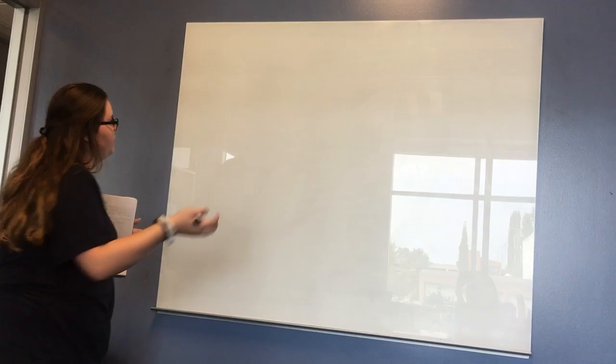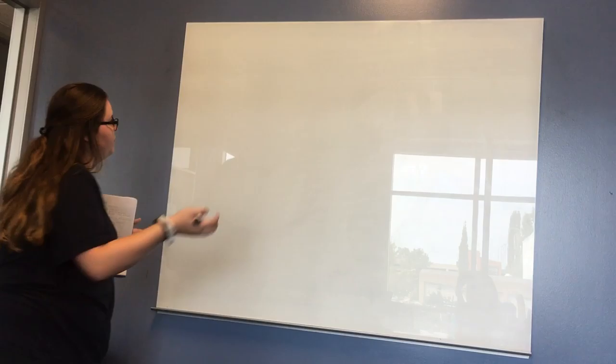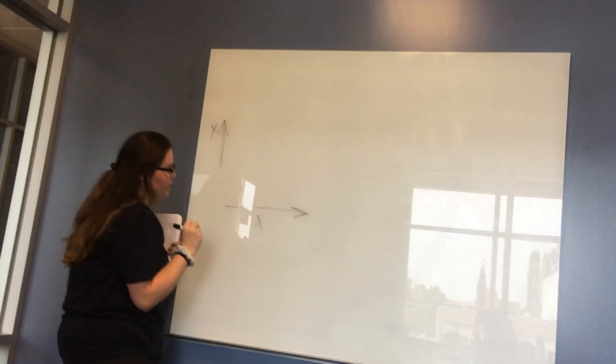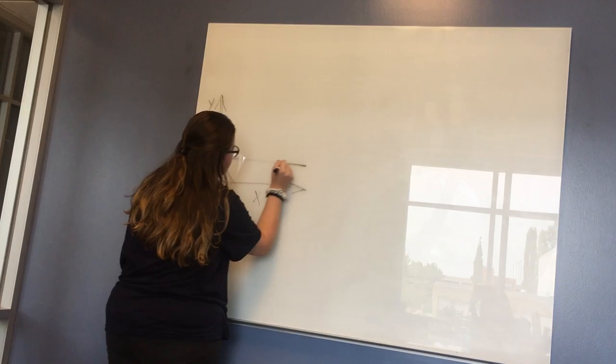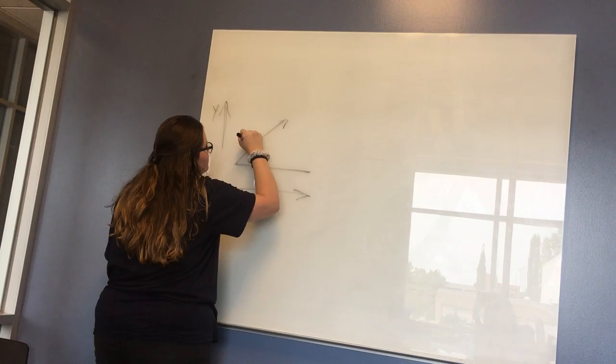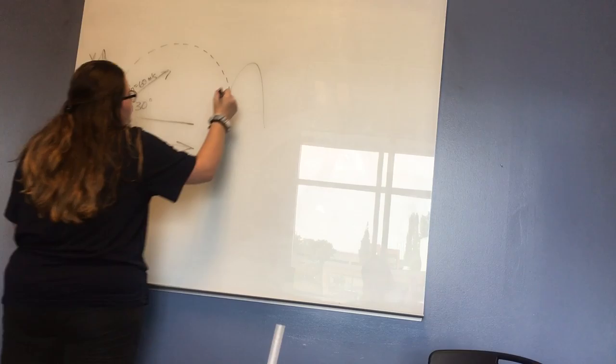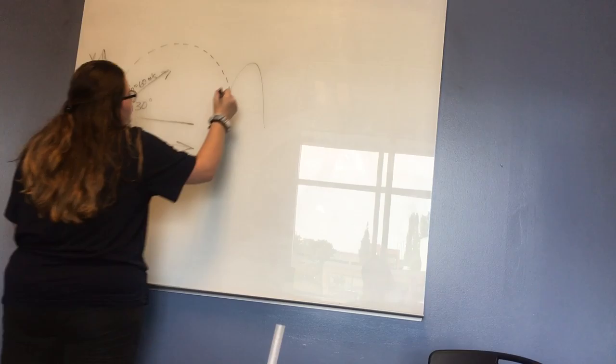Our first step is going to be to draw the picture for this problem. We're going to have our y-axis going up and then our x-axis going horizontally, and then we have our ground. Our projectile velocity is 60 meters per second and this angle is 30 degrees, and then our projectile is launched to a hillside where it lands four seconds later.